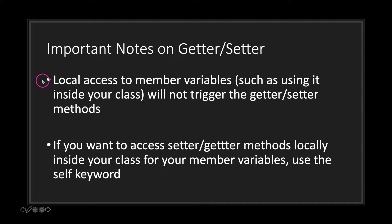Some important things to note about getter and setter functions when declaring them inside a class: your class will have access to member variables, and if you choose to access your member variables the normal way you will not trigger the getter and setter methods tied to that member variable. If you want to access setter and getter methods locally inside your class for your member variables, you need to use the self keyword.